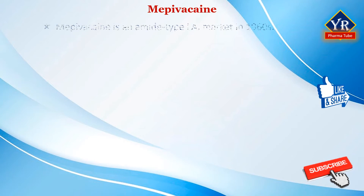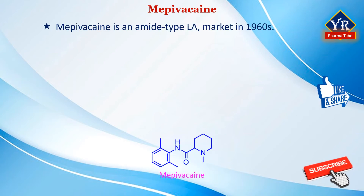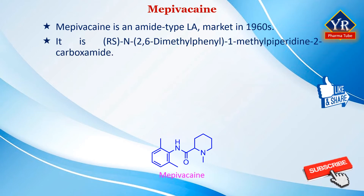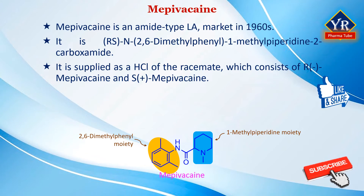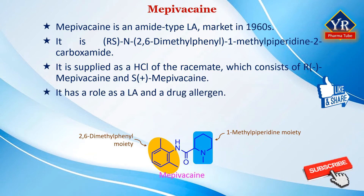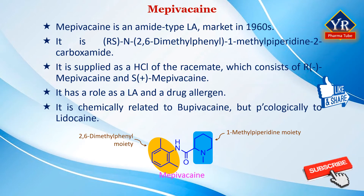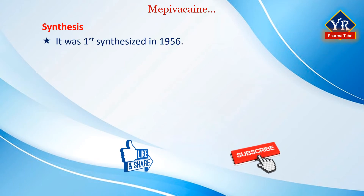The second drug is mepivacaine. Mepivacaine is an amide-type local anesthetic that became available in the US in the 1960s. It is chemically a racemic mixture of N-2,6-dimethylphenyl-1-methylpiperidine-2-carboxamide. It is a piperidine carboxamide in which N-methylpipecolic acid and 2,6-dimethylaniline have combined to form the amide bond. It is supplied as the hydrochloride salt of the racemate, consisting of R-mepivacaine and S-mepivacaine in equal proportions. These two enantiomers have markedly different pharmacokinetic properties. It is chemically related to bupivacaine but pharmacologically related to lidocaine, with a reasonably rapid onset and medium duration of action.